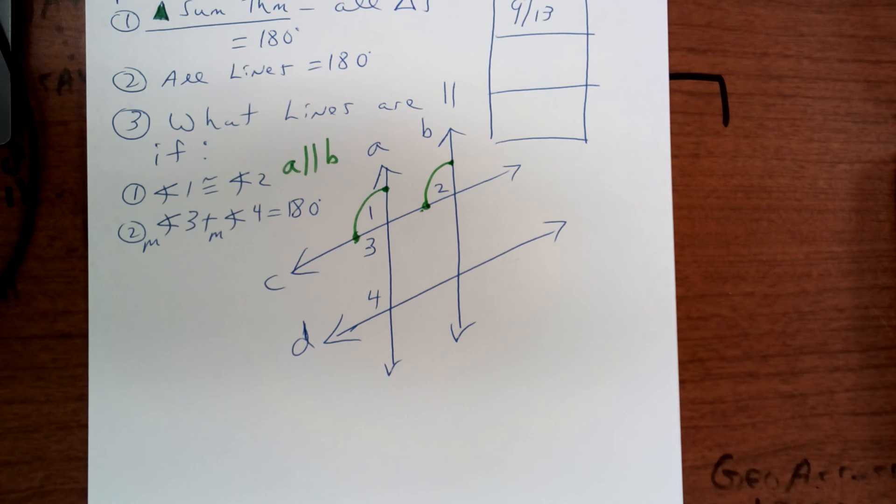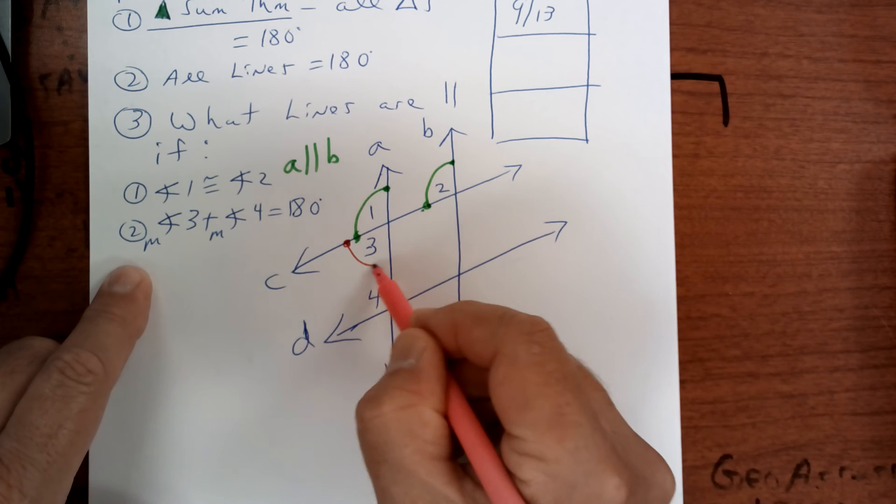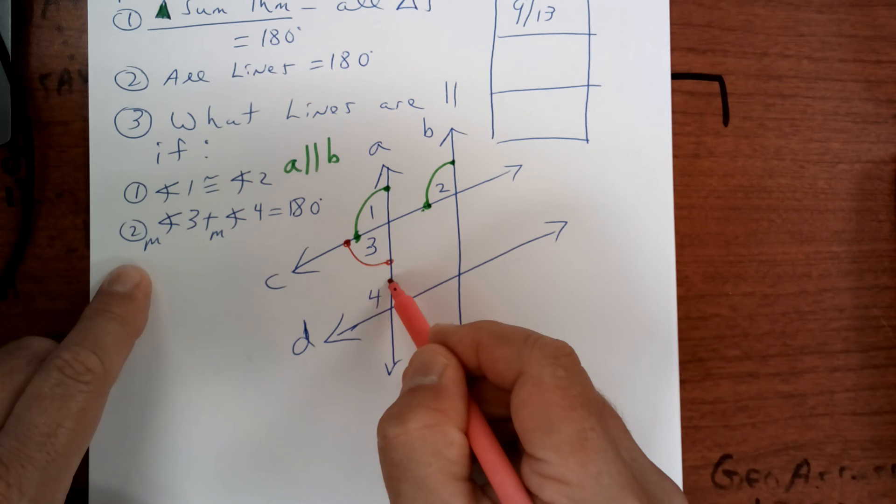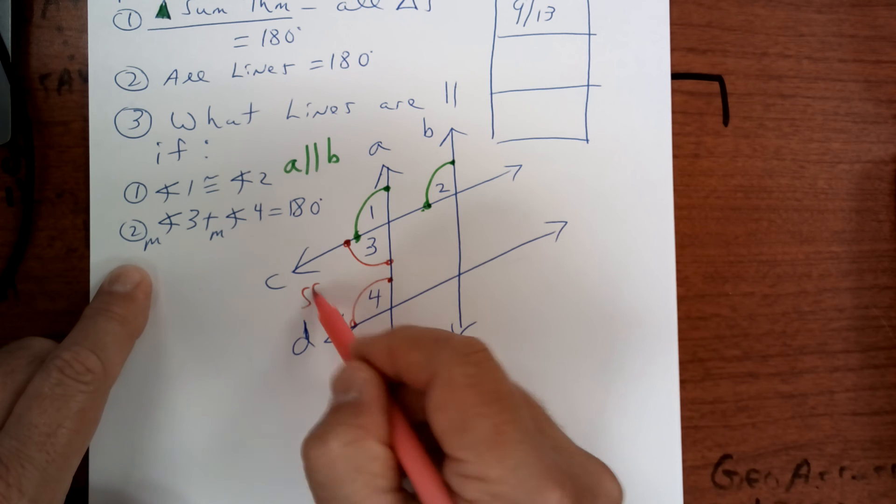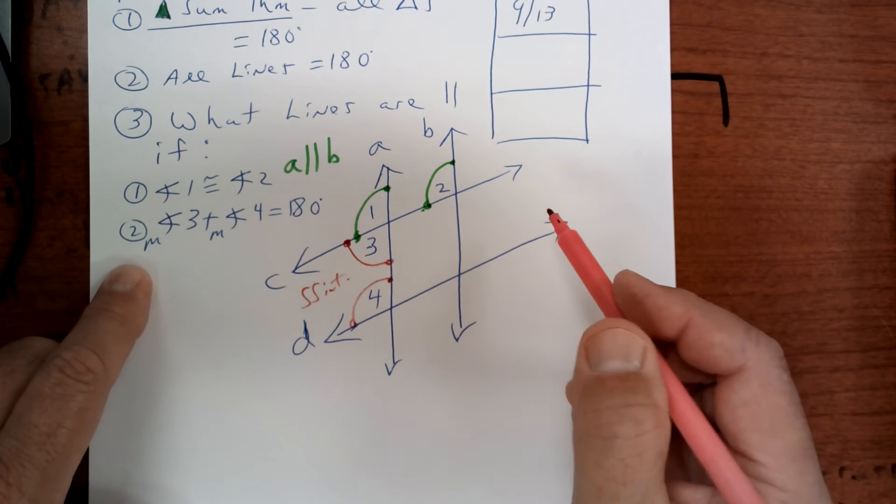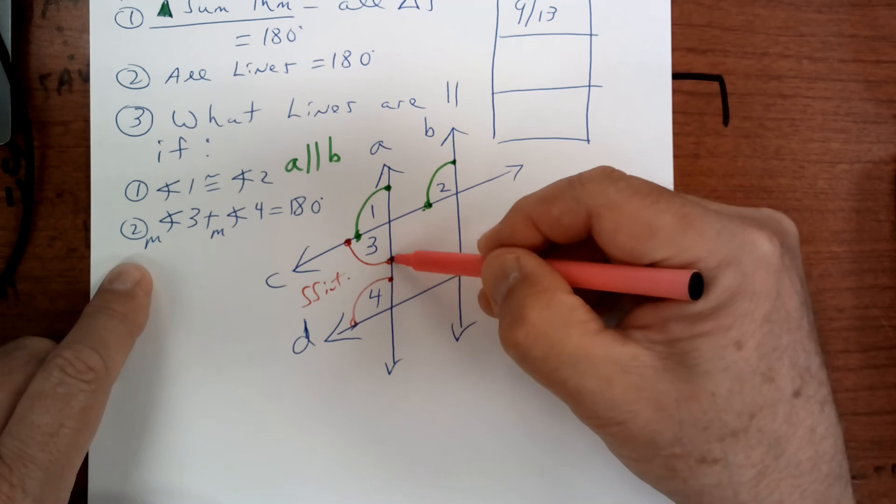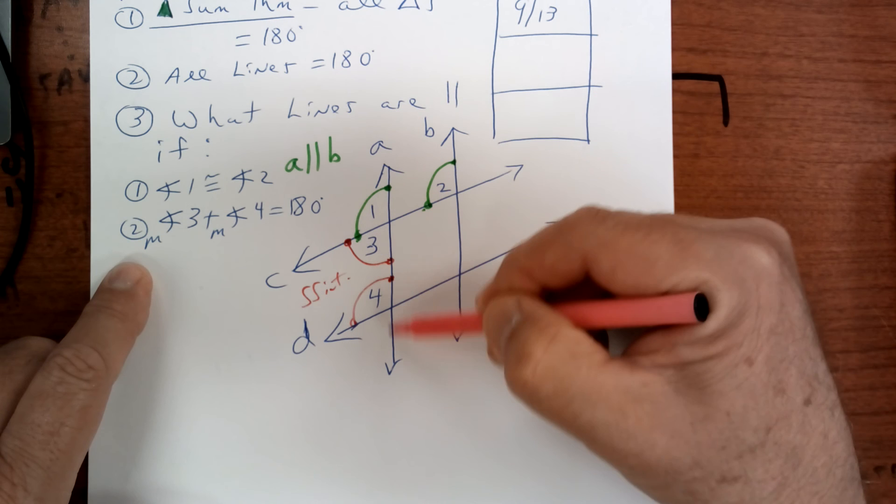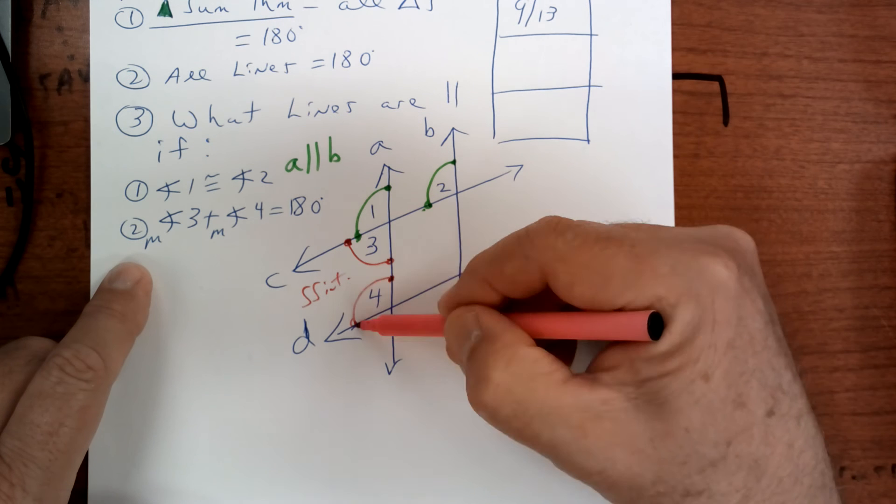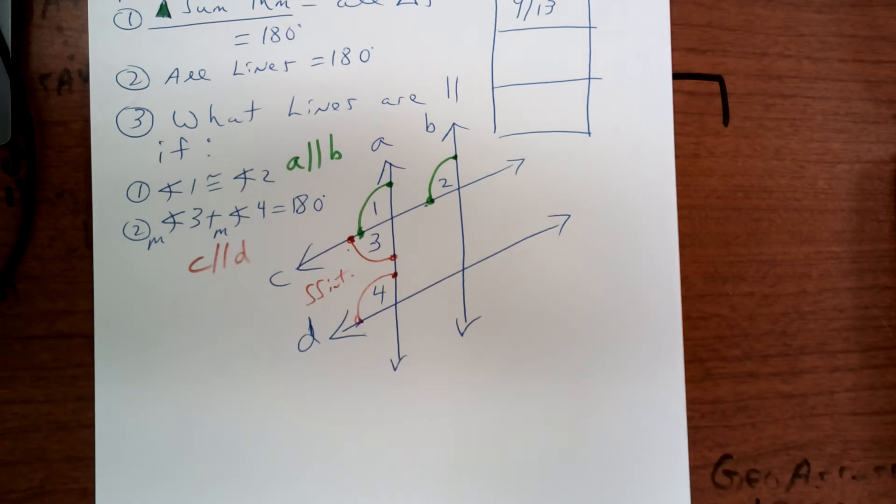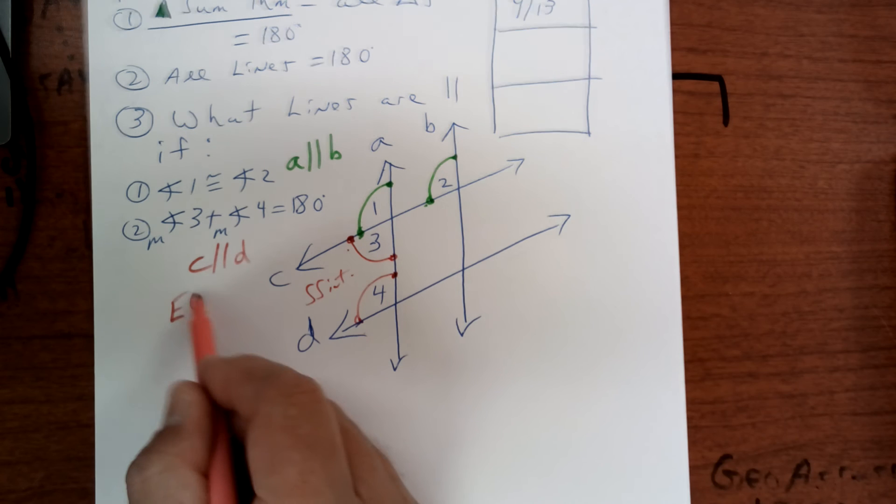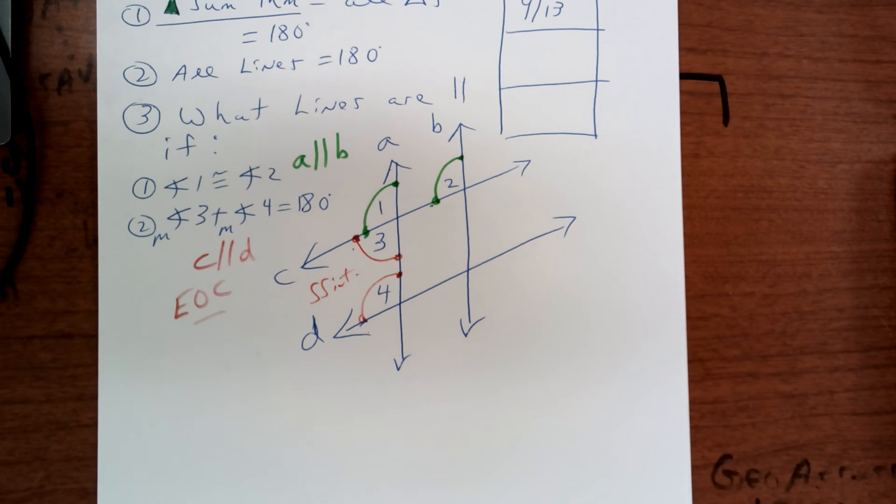What if three measure plus four measure added up to 180? Well, those are same side interior. If they have two dots, that's your transversal. This one has one dot, so this would be C parallel to D. Make sure you know that. Put EOC because that is an EOC question. Raise your hand if you need any help.